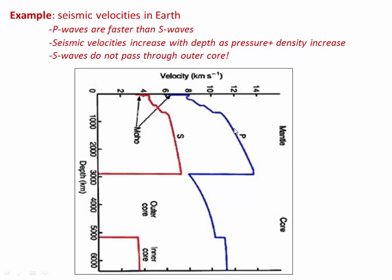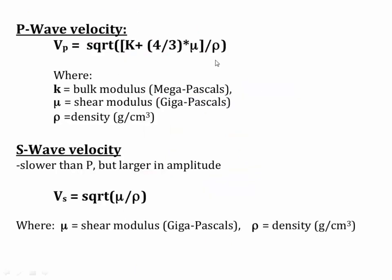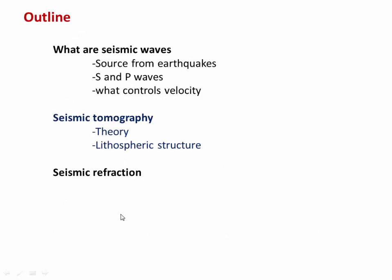It's these seismic velocities that tell us the nature of Earth's interior — this is how we know for sure that Earth's outer core is in fact liquid. I'm including the equations for P-wave and S-wave velocity here for your reference. Now that wraps up what seismic waves are. Let's look at how we can use them to actually image Earth's interior in detail.